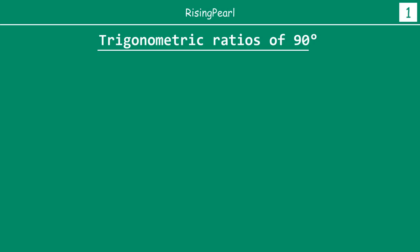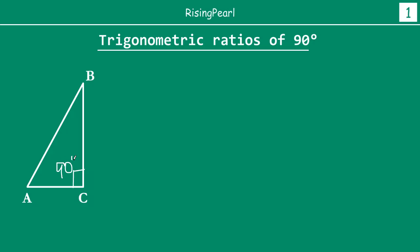As we always do, whenever we want to find a trigonometric ratio, we know first it is about an angle and second it has to be in a right triangle. So here we have drawn a right triangle ABC such that angle C is 90 degrees. We want to find the trigonometric ratios for angle A, and our goal will be to make angle A equal to 90 degrees.